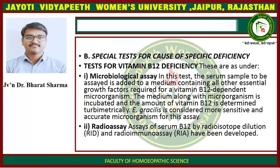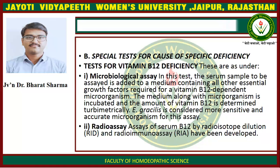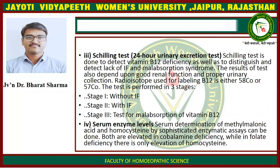Special Tests for Specific Deficiency — Tests for Vitamin B12 Deficiency: First, microbiological assay: the serum sample is added to a medium containing all other essential growth factors required for the vitamin B12-dependent microorganism; the medium with microorganism is incubated and the amount of vitamin B12 is determined turbidimetrically. Euglena gracilis is considered the more sensitive and accurate microorganism for this assay. Radio assay: assay of serum B12 by radioisotope dilution and radio immunoassay have been developed. Schilling test (24-hour urinary excretion test): the Schilling test is done to detect vitamin B12 deficiency as well as to distinguish and detect lack of intrinsic factor and malabsorption syndrome. The result of the test depends upon good renal function and proper urinary collection. The radioisotope used for labelling B12 is either 58Co or 57Co.